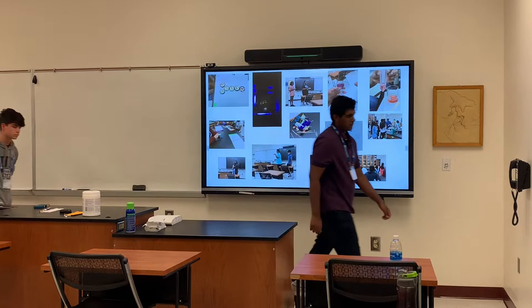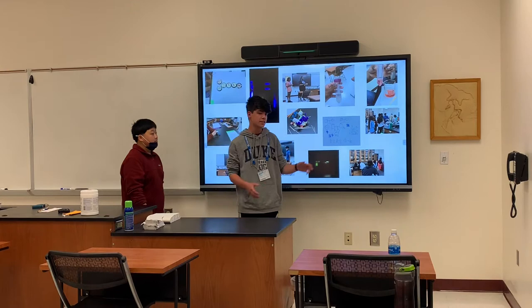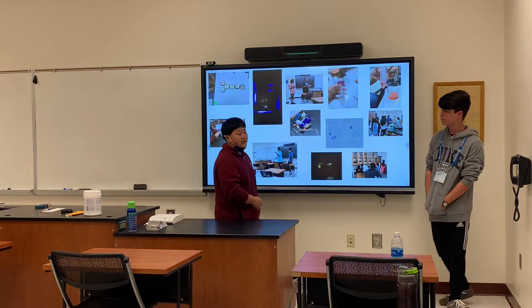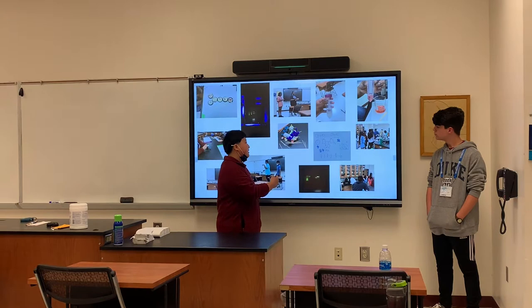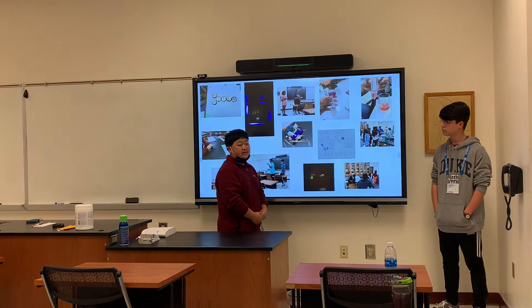We also learned about pedigrees, which are essentially just graphs that detail a family's history of certain diseases genetically. The circles and squares represent female and male respectively. The dots in them represent that they are carriers of that disease, and the ones that are shaded in represent the ones who are affected by the disease.